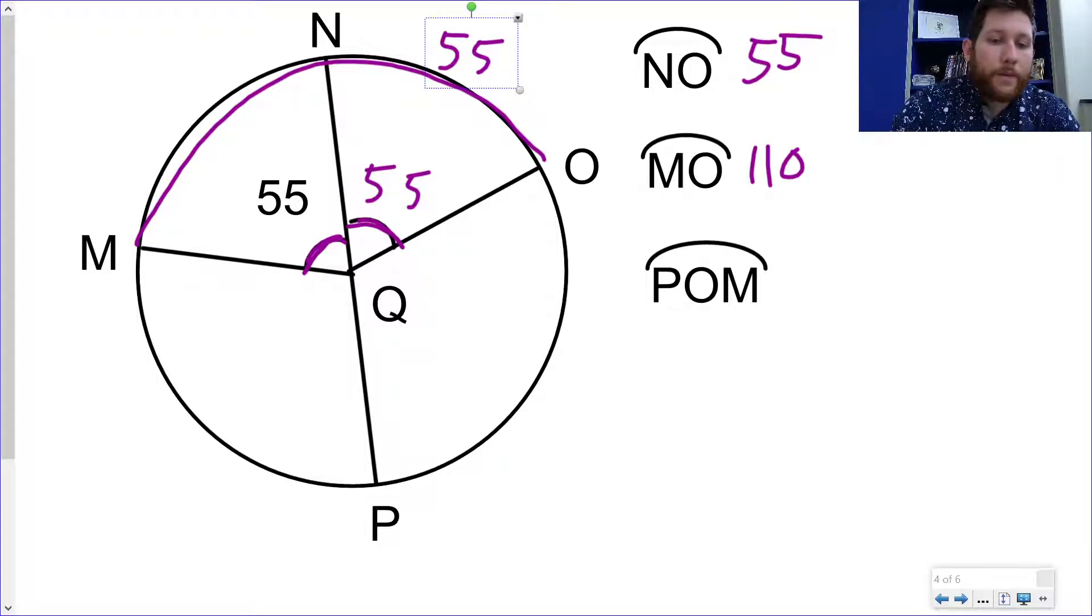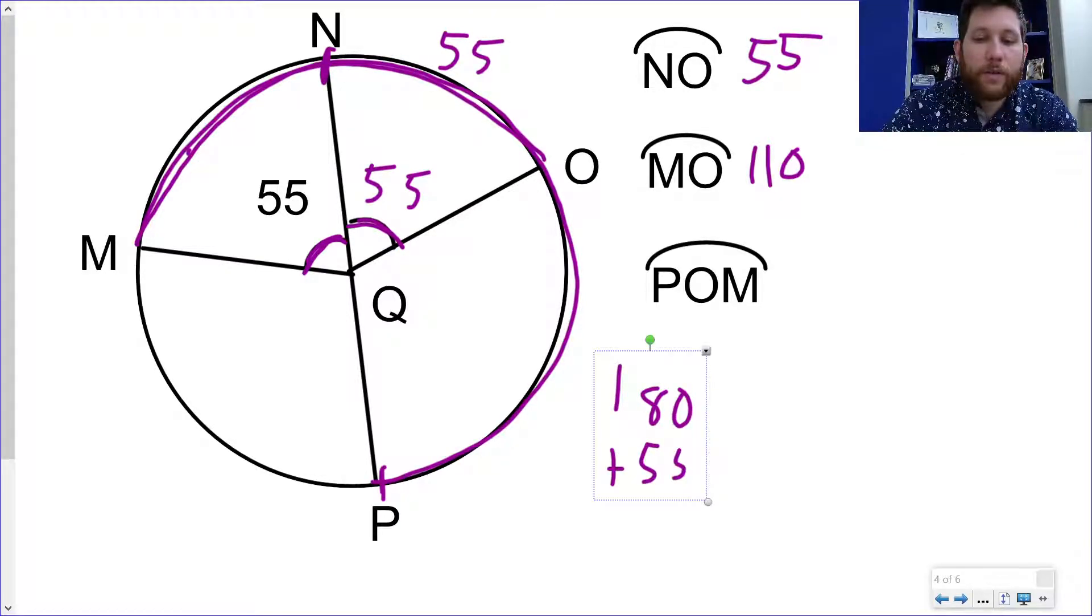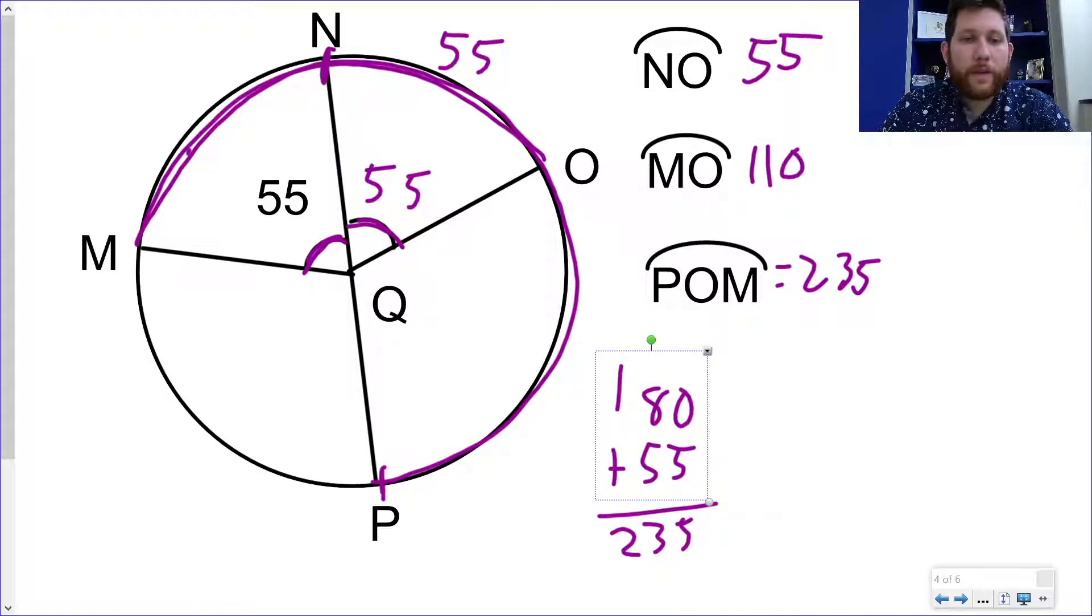And then POM. So POM is going to go the whole way around like this. Now there's a couple of ways to think about this. We could solve for P to O if we wanted to. I don't really want to. I actually kind of want to go from P to N and say that's half the circle. That's 180. And then add 55. So I'm going to do 180, half the circle, plus that 55 angle, and we will get 235. All right, let's take a look at one last problem here.